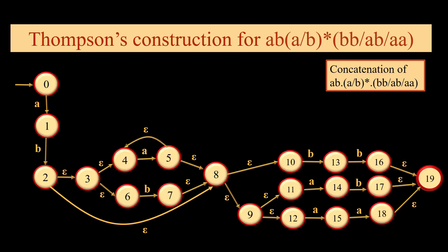Now we join all three. This is the concatenated output for ab, (a or b) star, and bb or ab or aa. So first is ab, then comes (a or b) star, and finally we have bb, ab, or aa.